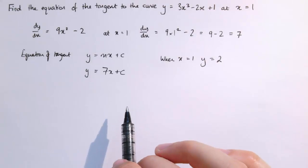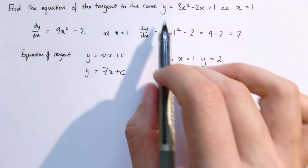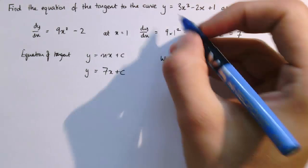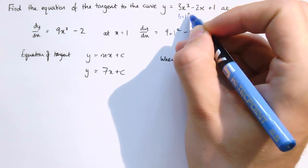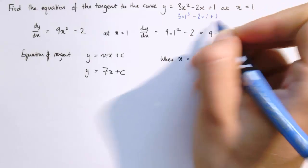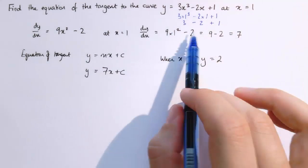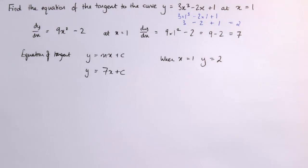If you didn't have the graph sketched in front of you, you could substitute x equals 1 into the equation of the curve. We'd get 3 times 1³ minus 2 times 1 plus 1, which gives 3 minus 2 plus 1, which is 2 as well. We don't need the graph to do that.